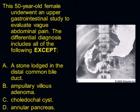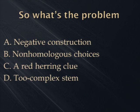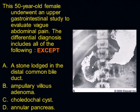Here's another one. 'A 50-year-old female underwent an upper gastrointestinal study to evaluate vague abdominal pain. The differential diagnosis includes all the following except.' What's the problem? It's the 'except' — negative construction. So it gets the boot automatically. Now why do I say this is a venial sin and not a mortal sin? When we come up with differential diagnoses — if you say each of the following is in the differential diagnosis of this lesion except what — I don't feel that badly about that, because you're saying I ought to know the only hepatic lesion I shouldn't be thinking about here.